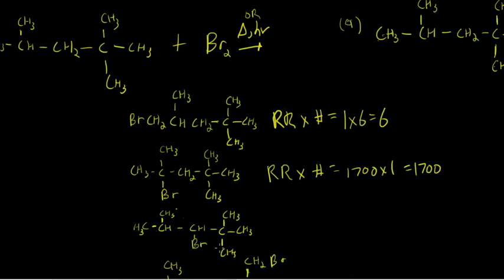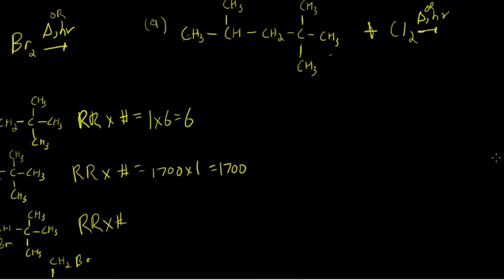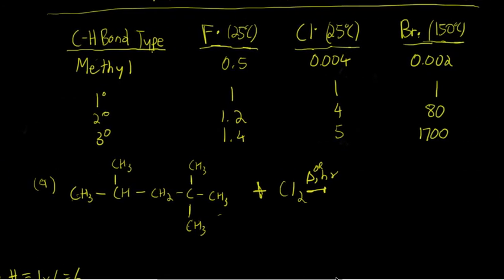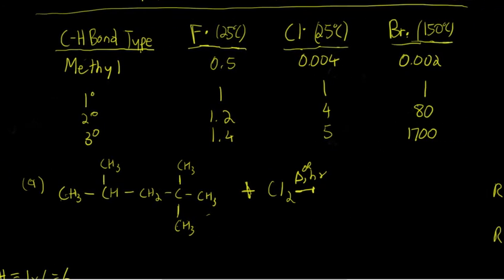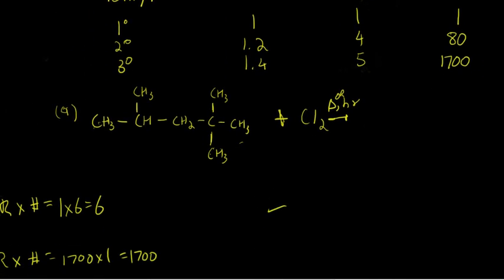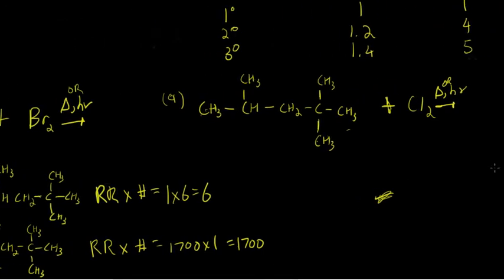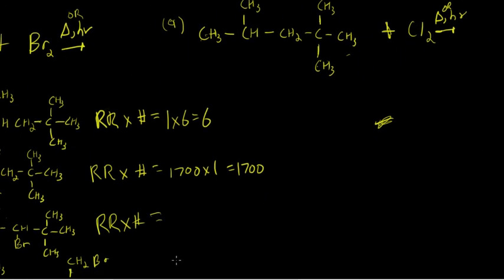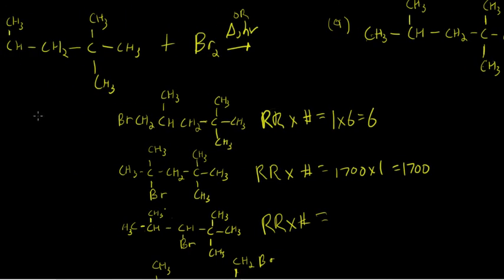Now for the secondary product, we have two secondary hydrogens whose substitution would lead to this product. Looking up the relative reactivity of secondary hydrogens to bromine from the table — it's 80. So 80 times 2 is 160.